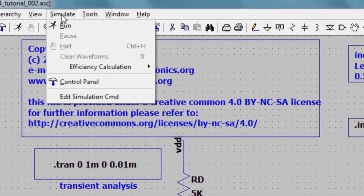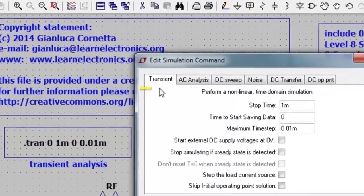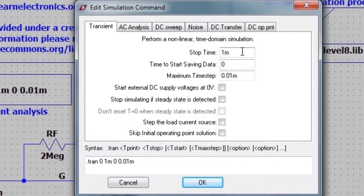To configure a simulation, I go to simulate, edit simulation command, and choose transient analysis, setting the stop time and the maximum time step.